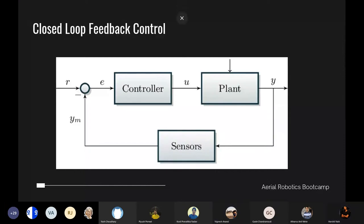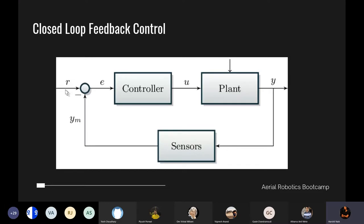The closed loop feedback control is well suited for drones. Drones are a very complex mathematical system and modeling them is hard — we need to take into account all the complex airflows and maneuvers involved. It is easier to work on the basis of expected and actual outputs, hence we use a feedback controller. A controller receives an input signal r and passes it to a controller block, which gives an output u to the plant — our drone. The drone executes u and gives an output y.